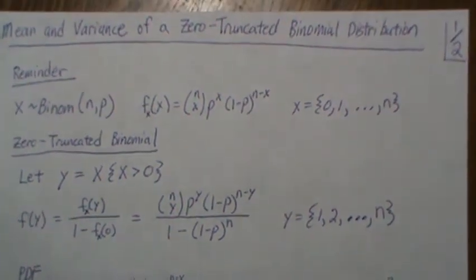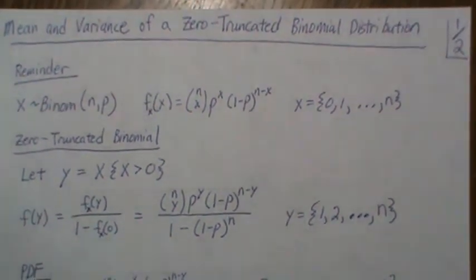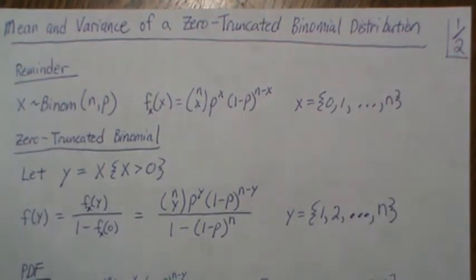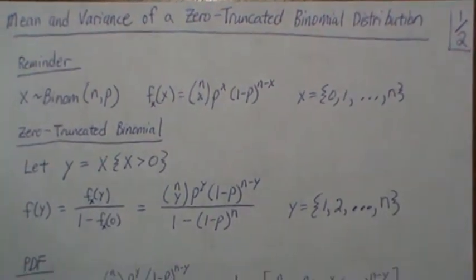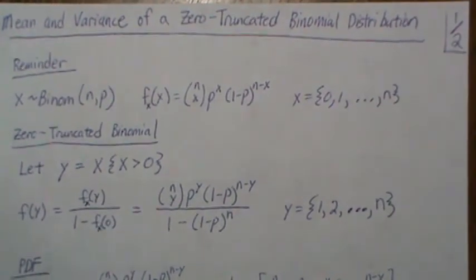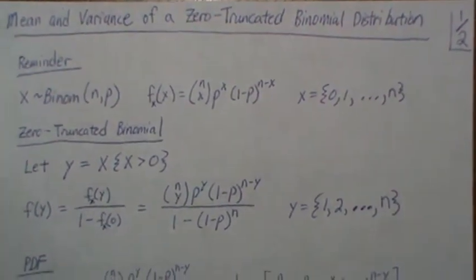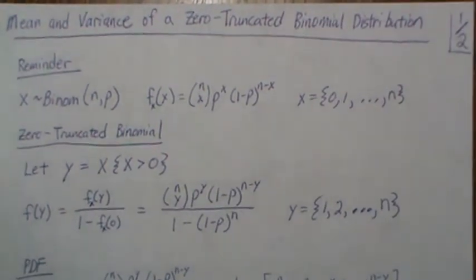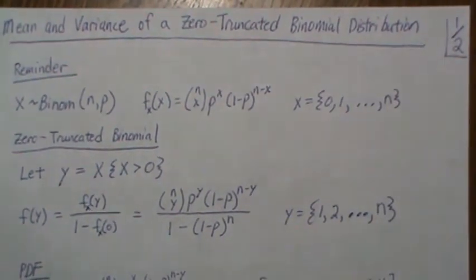In this video we're going to derive the mean and the variance of a zero-truncated binomial distribution. Briefly, a zero-truncated binomial distribution is a binomial distribution with the possibility of a zero occurring removed.